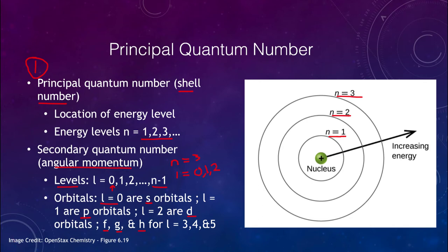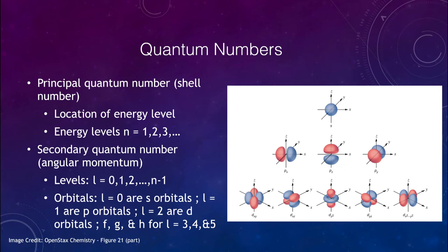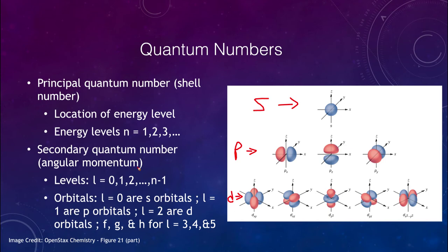Looking at these energy levels in our image: the s level is a very simple, essentially spherical area. The p levels are split along different axes into two lobes. The d levels are split into four lobes, and they get more and more complex as we work through higher quantum numbers.